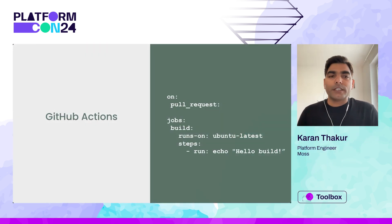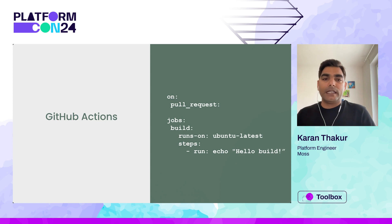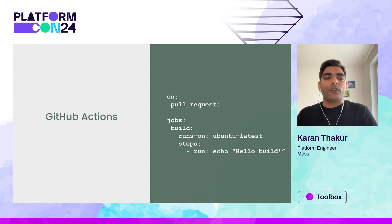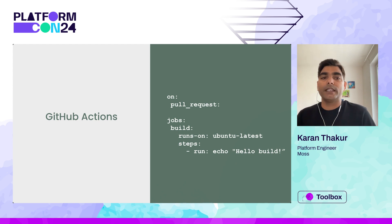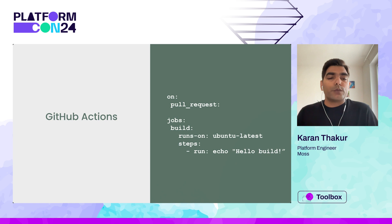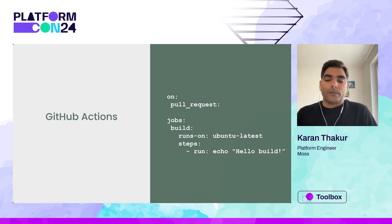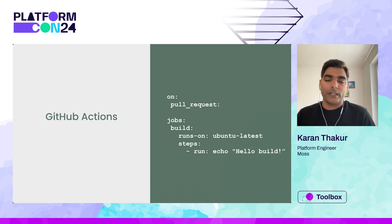Before diving deep into self-hosted runners, let's briefly introduce GitHub Actions. GitHub Actions is a CI/CD platform that works on a choose-your-own-adventure approach, meaning the flexibility to use community-shared actions or write your own actions using any supported language. Writing a workflow is quite easy, as shown in the example on the right side. Here we have defined a trigger, so it will execute on a pull request.